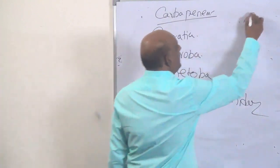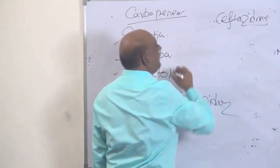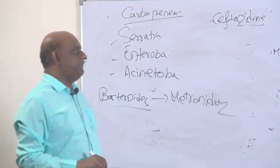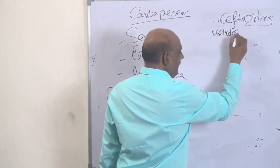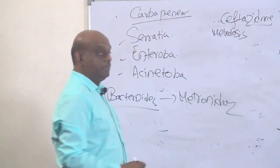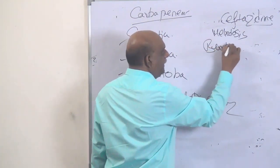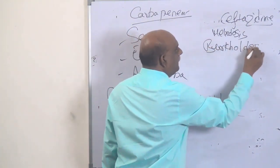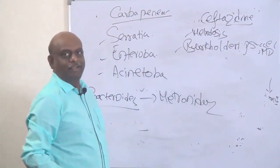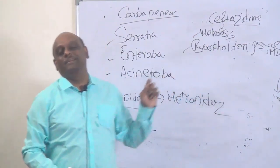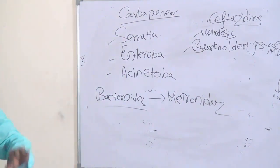Ceftazidime — is there any special location where it is the drug of choice? Definitely: melioidosis. What causes melioidosis? Burkholderia pseudomallei leads to development of melioidosis — this itself is an MCQ. Ceftazidime is the drug of choice. This is the story of antibiotic drug of choice.